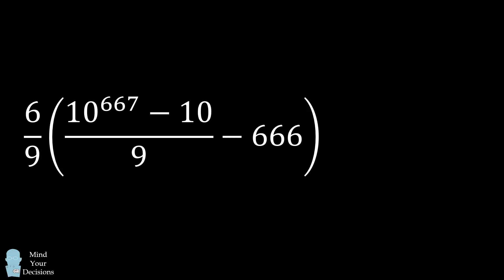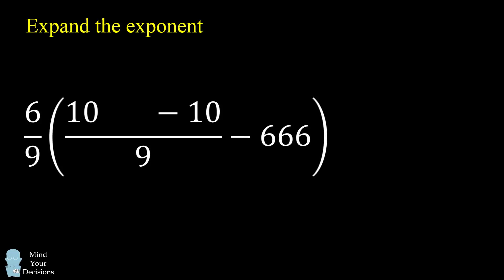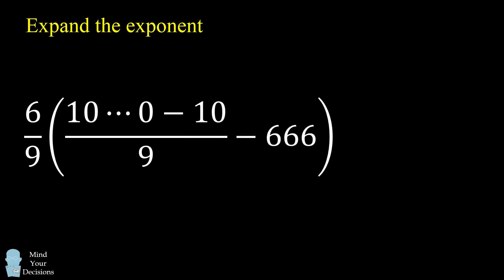So now how can we write this out as a decimal number? Well, what we can do is we can expand the exponent. 10 to the power of 667 will be a number that's 1 followed by a bunch of zeros. This number will have 668 digits.